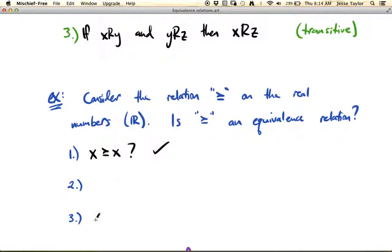Let's go ahead and skip down here to three. If X is greater than or equal to Y and Y is greater than or equal to Z, is X greater than or equal to Z? So you may want to ask yourself if this is true. And this part is also true. So far so good.